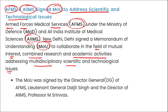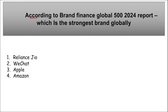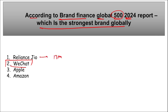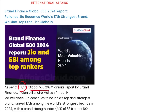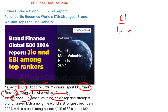According to the Brand Finance Global 500, 2024 report, which is the strongest brand globally? WeChat has topped the list and is considered the strongest brand. Reliance Jio of India is on the 17th position globally, and is the top Indian brand. After WeChat comes YouTube, then Google. As per the 18th edition of the Global 500 annual report by Brand Finance, Mukesh Ambani's Reliance Jio is 17th globally. Brand Finance's CEO is David Haigh and its headquarter is in London, UK. It was established in 1996.